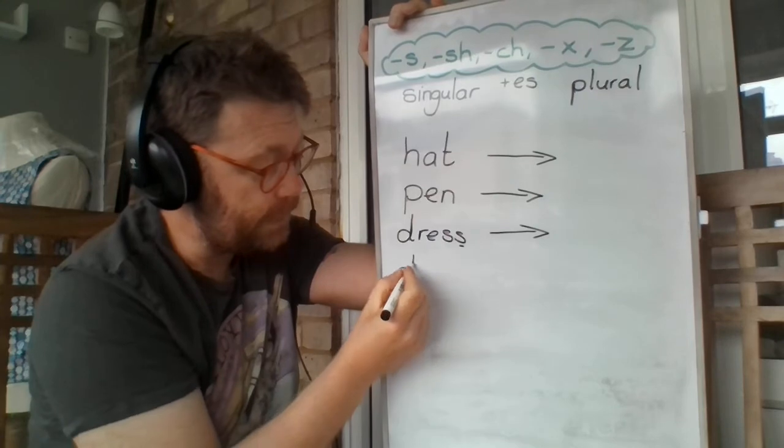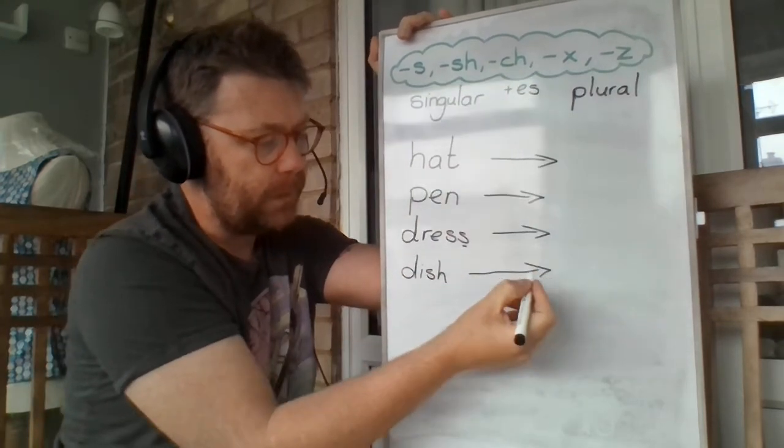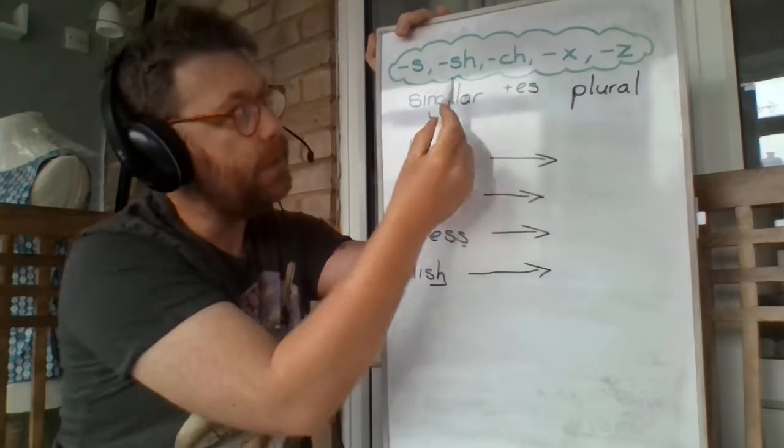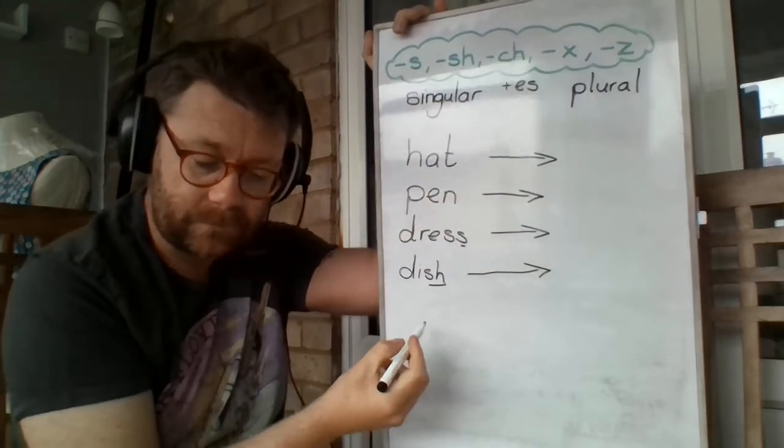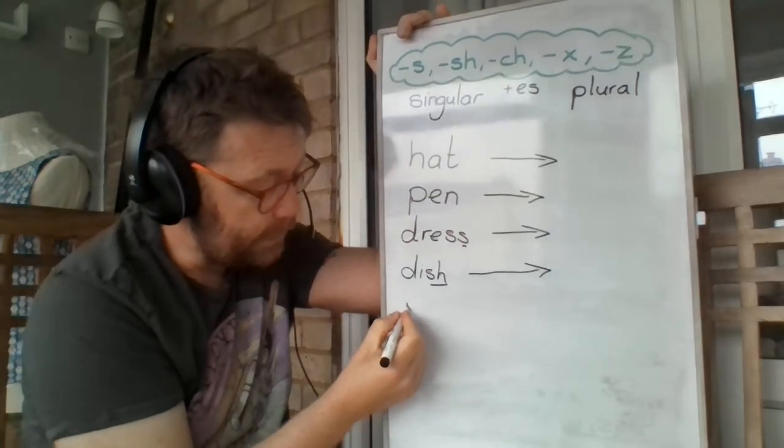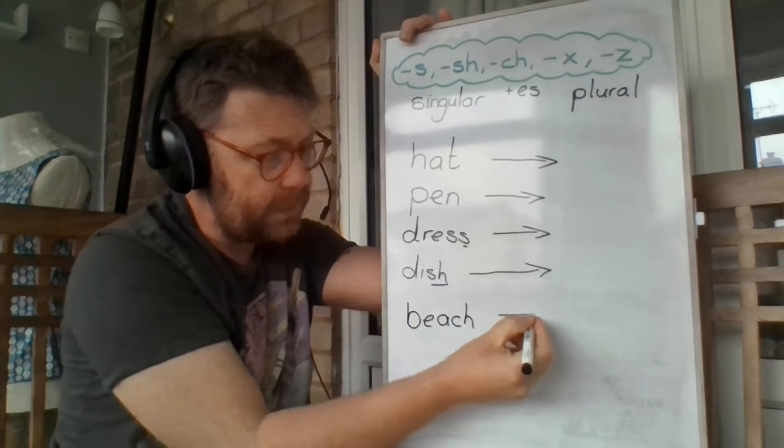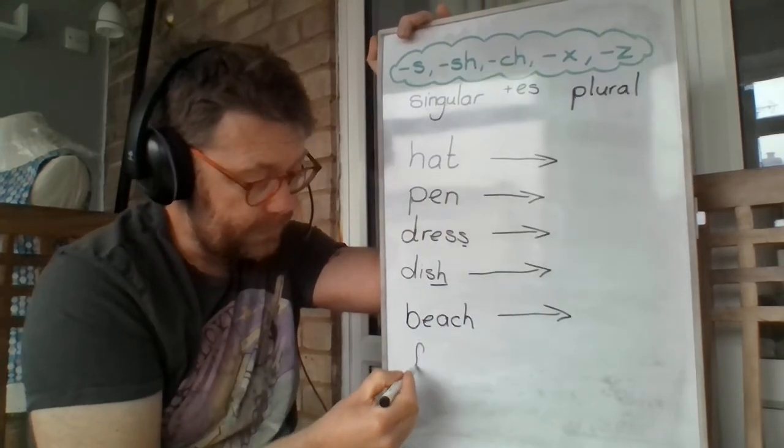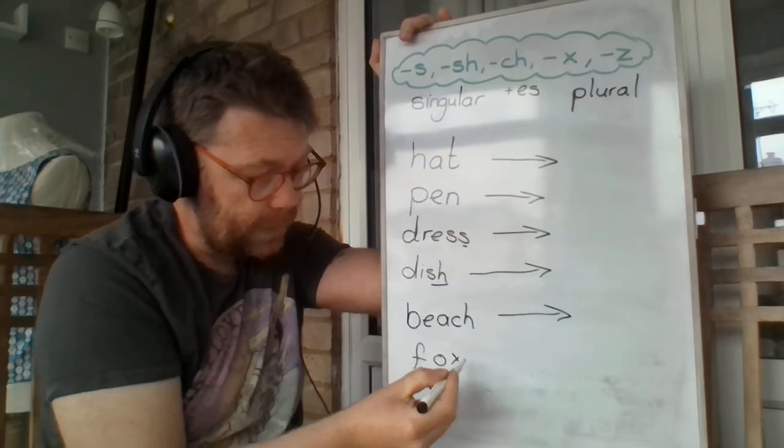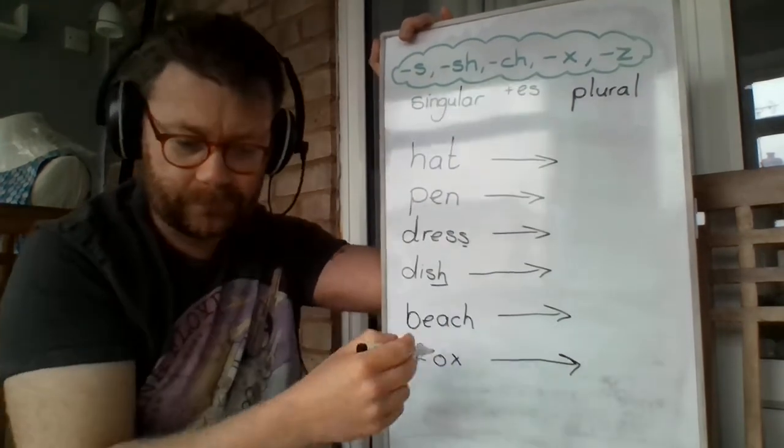If it's one of these sounds in the cloud, you have to add ES, remember. I'm going to wash the dish. I'd rather you washed all of the... Look what it ends in. It's one of our sounds up here. You have to add ES. I like to visit a beach. I like to visit lots of... Oh look, there is a fox. Wow. Actually, there are loads of... And finally, one of those tricky nouns that end with Z.